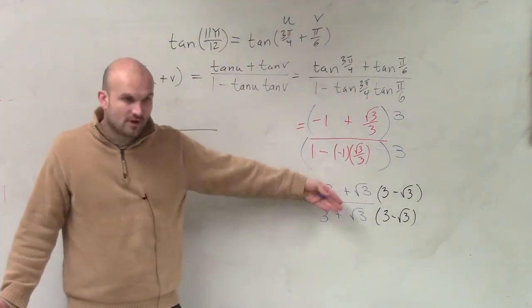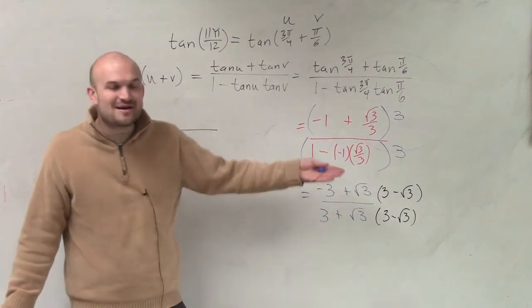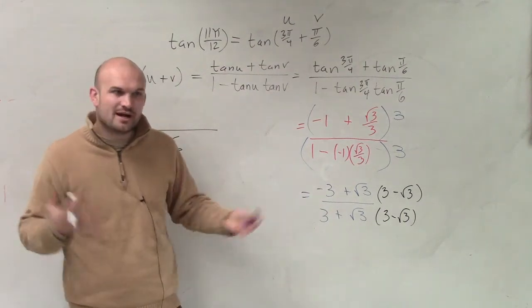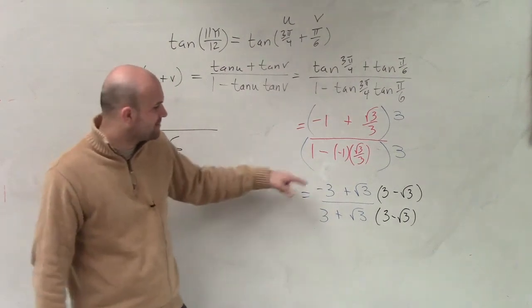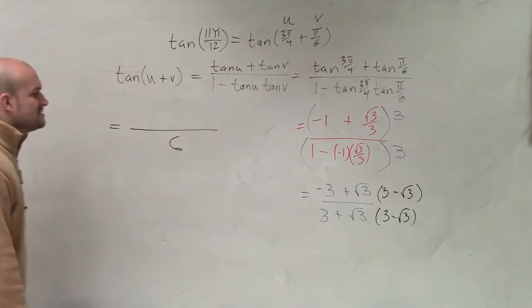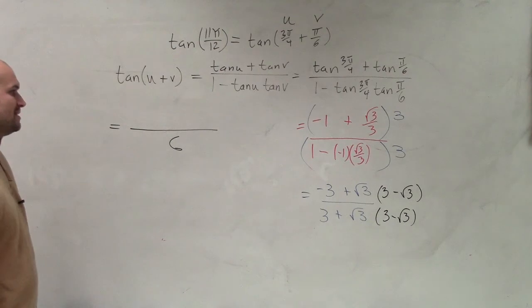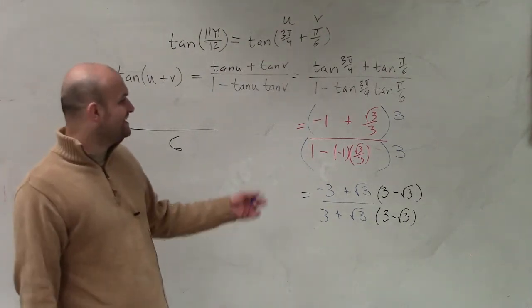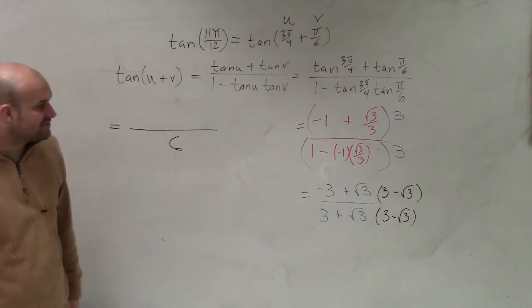Then up top, you have to do FOIL. Last time I did FOIL in my head, I made a mistake. So I'll do it again in my head, but try to do it in your head as well. So here I have negative 3 times 3, so that's going to be negative 9. That's going to multiply to give me negative 9. That's going to be negative 3, so that'll be negative 12.